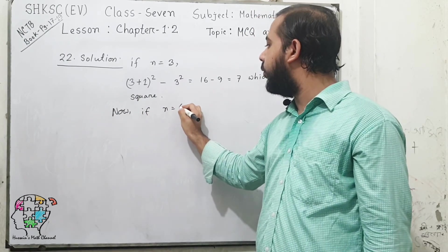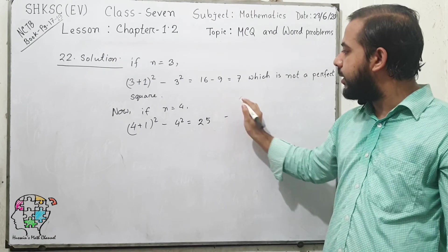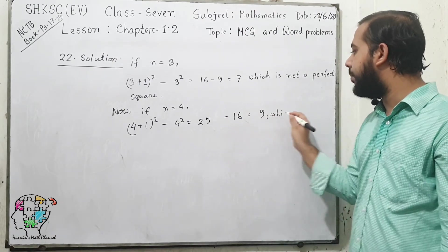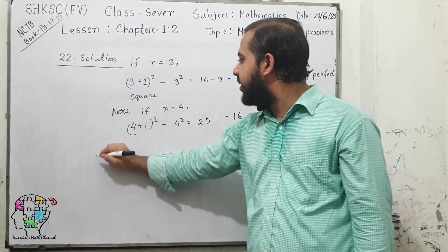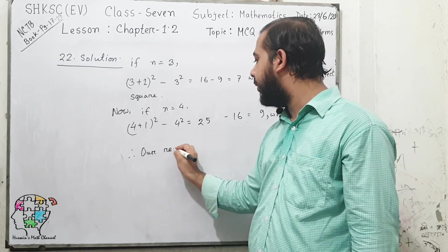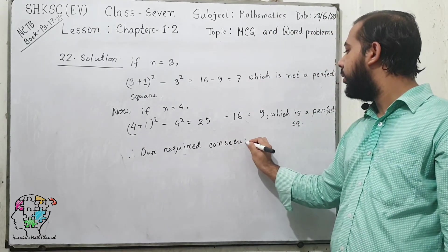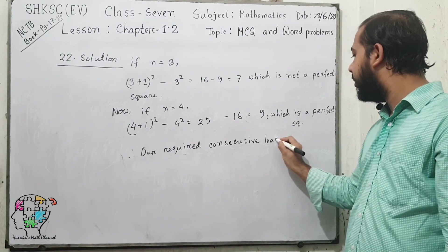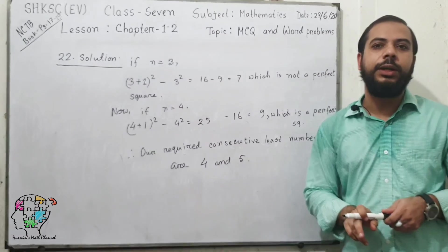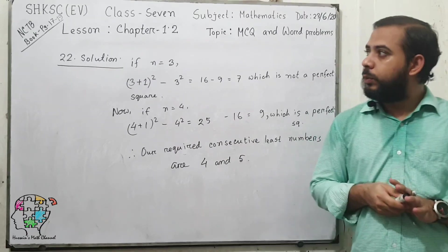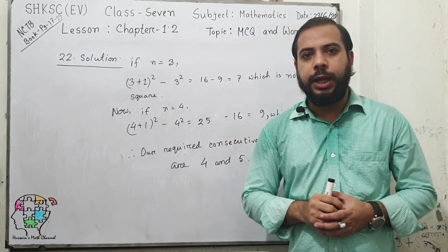If n = 4: (4+1)² minus 4² = 25 minus 16 = 9, which is a perfect square. So our required consecutive numbers are 4 and 5. Therefore, the two required least consecutive numbers are 4 and 5, which completes our answer. In our next class, we will solve some creative questions from this chapter. Goodbye.